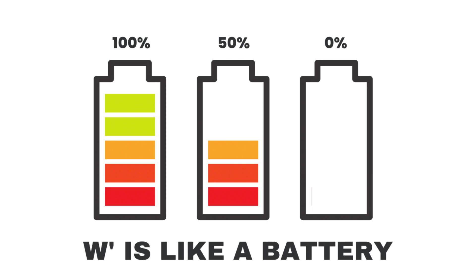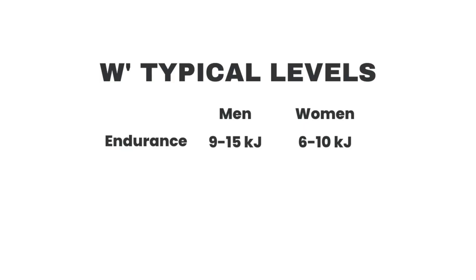When we measure W prime, we can compare it to some typical levels for endurance athletes. For example, this level is around nine to 15 kilojoules for men and around six to 10 kilojoules for women. Although these values can be bigger for athletes with a very high VO2 max. For punchy endurance disciplines, slightly higher W prime are better suited, such as between 15 to 18 kilojoules for men or 11 to 13 for women. At the other end of the spectrum, sprinters can have W prime values in excess of 25 to 30 kilojoules.